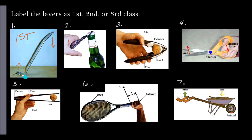Number two is a little bit more tricky. Your input is here — your hand going up; the output force is right here lifting the corner of the bottle cap; and the fulcrum is here at the bottle edge. If you have the output next to the fulcrum, kind of like a wheelbarrow, this would be a second class lever.